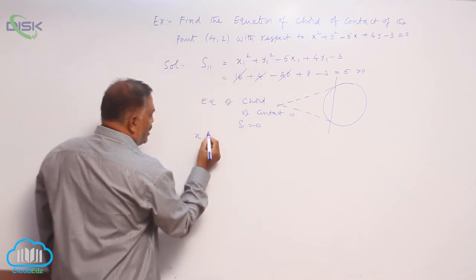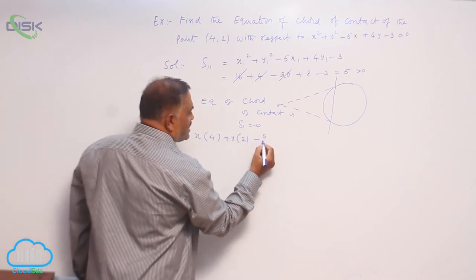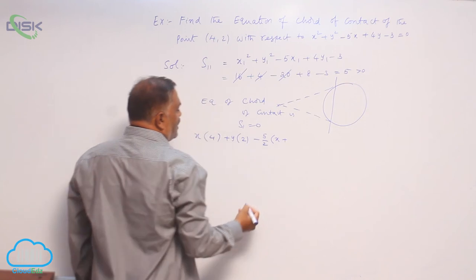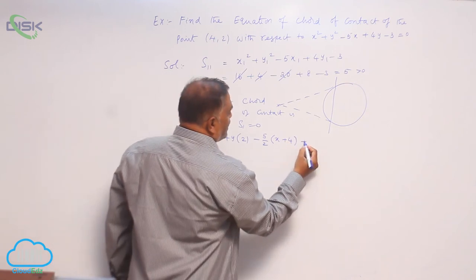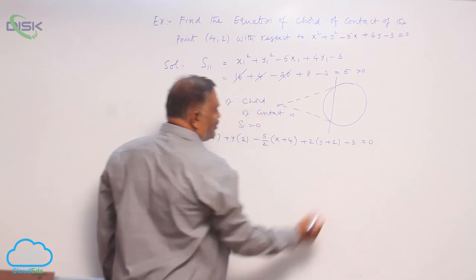Now you see, x into 4 plus y into 2 minus 5 by 2 into x plus 4 plus 2 into y plus 2 minus 3 is equal to 0.